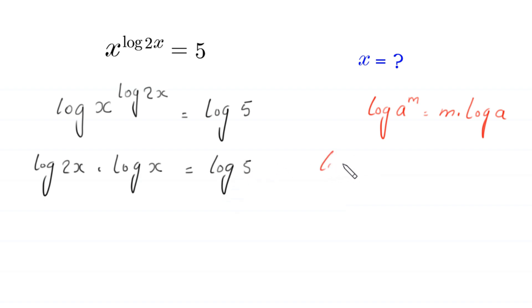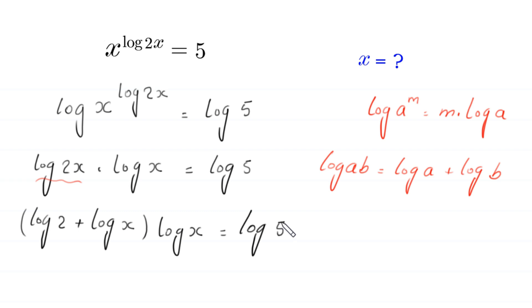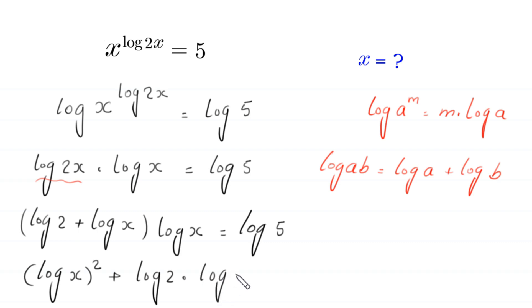Now, by using the log property log of a times b is equal to log of a plus log of b, this log of 2x will become log of 2 plus log of x. So we have: log of 2 plus log of x, times log of x, is equal to log of 5. Expanding: log of x whole squared plus log of 2 times log of x is equal to log of 5.